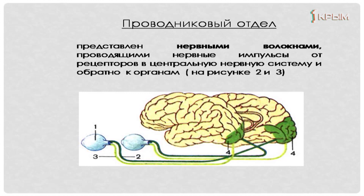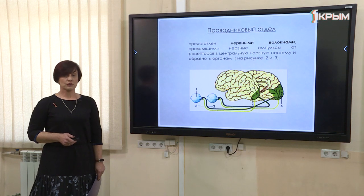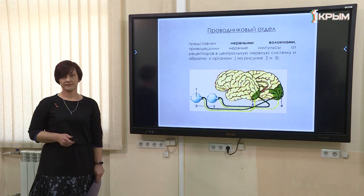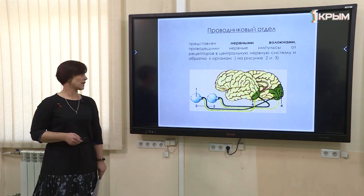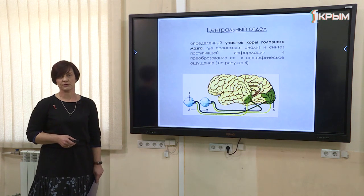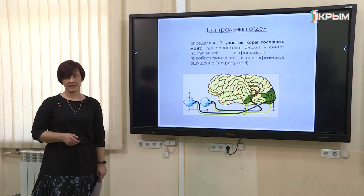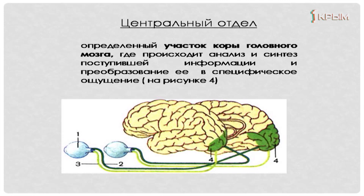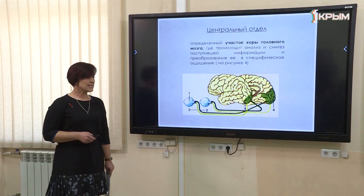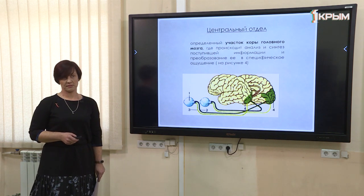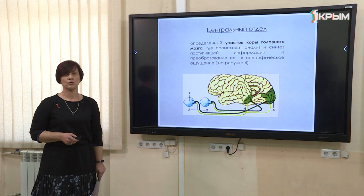Почему 2 и 3? Потому что не только мы отправляем нервные импульсы в центральную нервную систему, но и она отправляет нам назад уже готовую информацию о наших ощущениях. Кто берёт на себя самое главное — анализ полученной информации? Конечно же кора больших полушарий головного мозга — это центральный отдел анализатора. Он не только анализирует, но и создаёт новые ощущения. На картинке он обозначен цифрой 4.